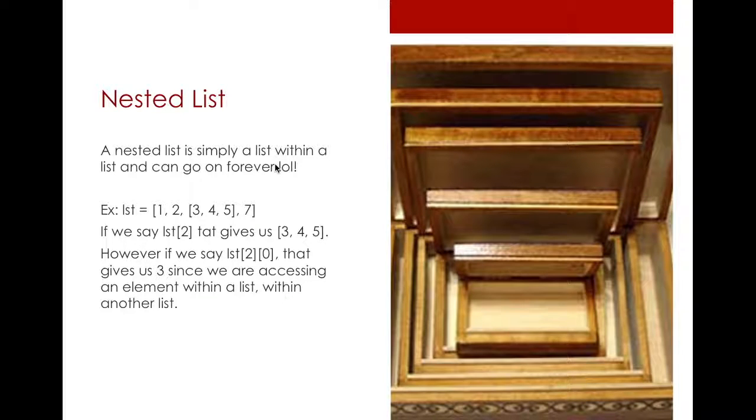A nested list is basically a list within a list. In Python you can have multiple lists that are within an enclosed main list. Here I have 1, 2, and 7 as regular ints. But the data type here is a list because you have another list that is within the big list here. You have a list that has 3, 4, and 5. So if I want to say list get me the value at index 2, that gives you 3, 4, and 5 because at index 2 it's a list.